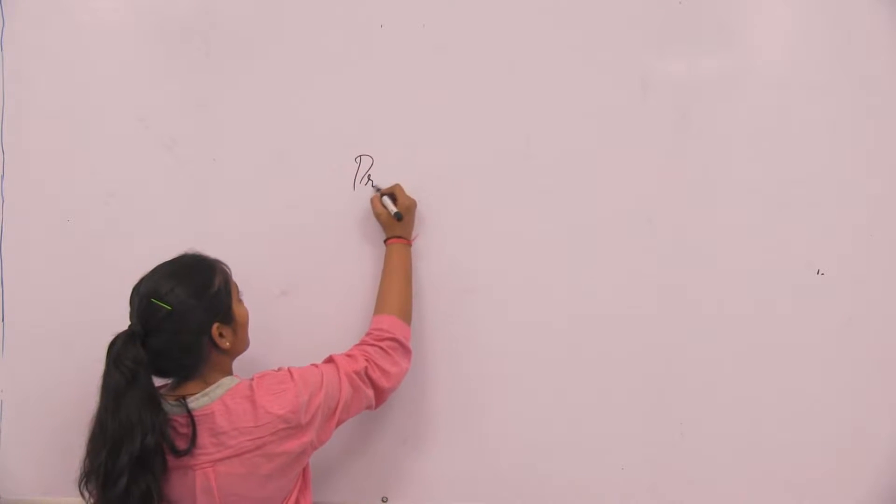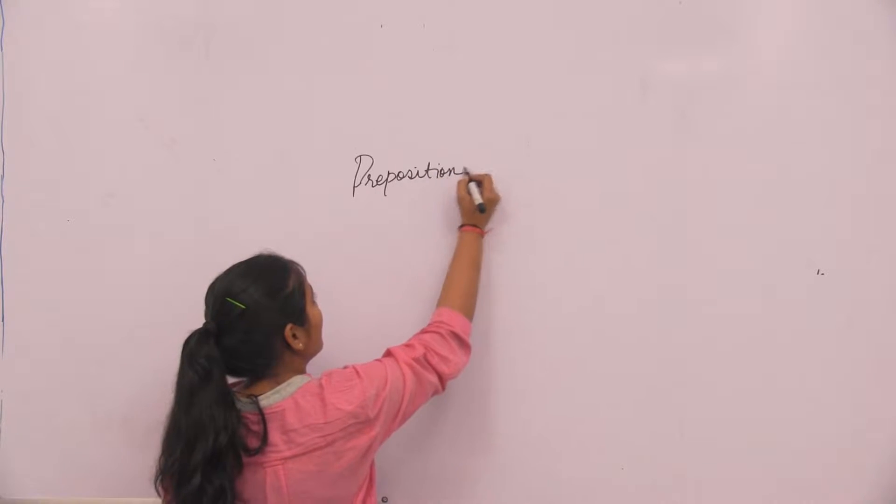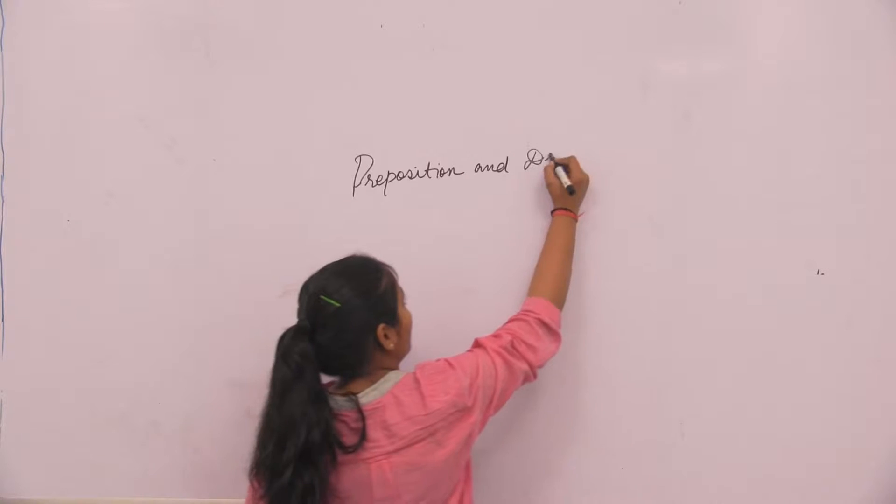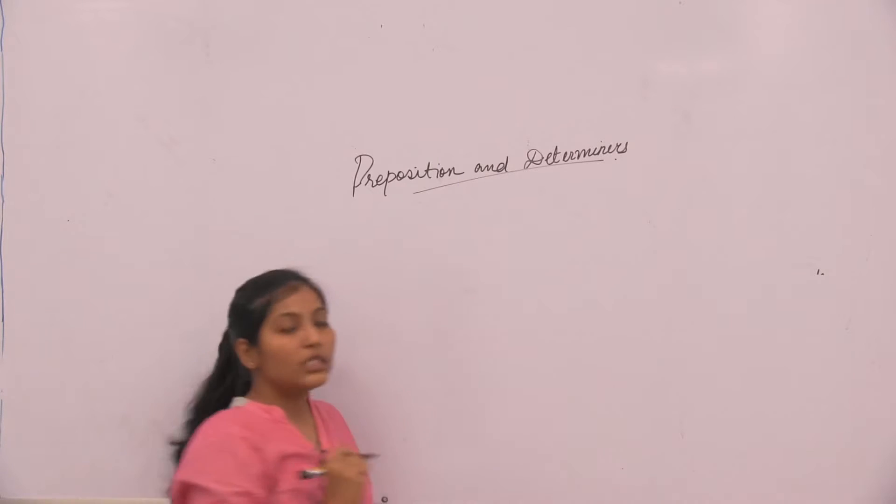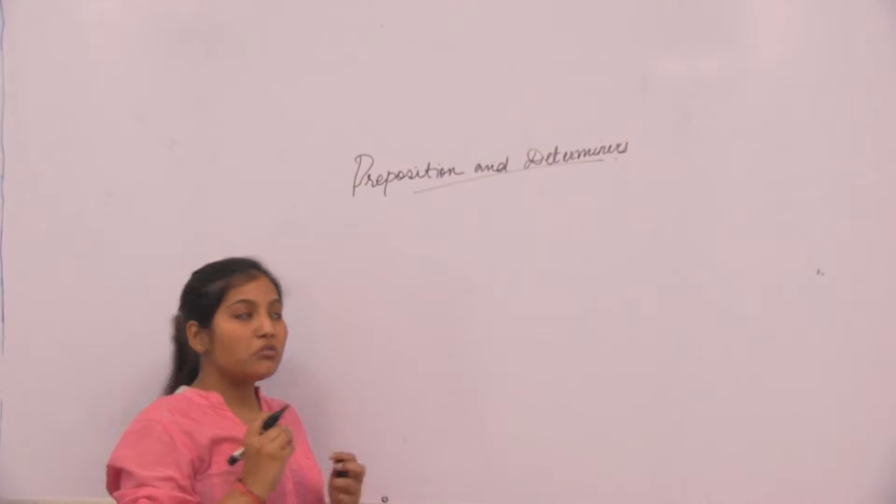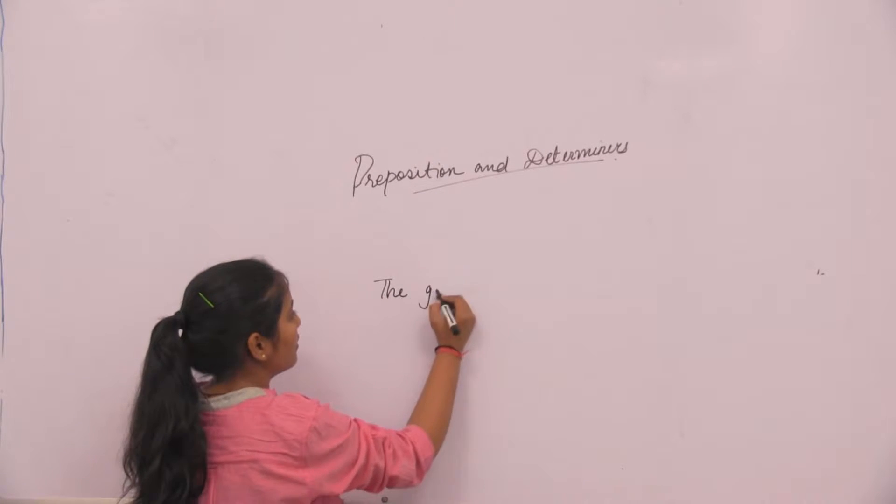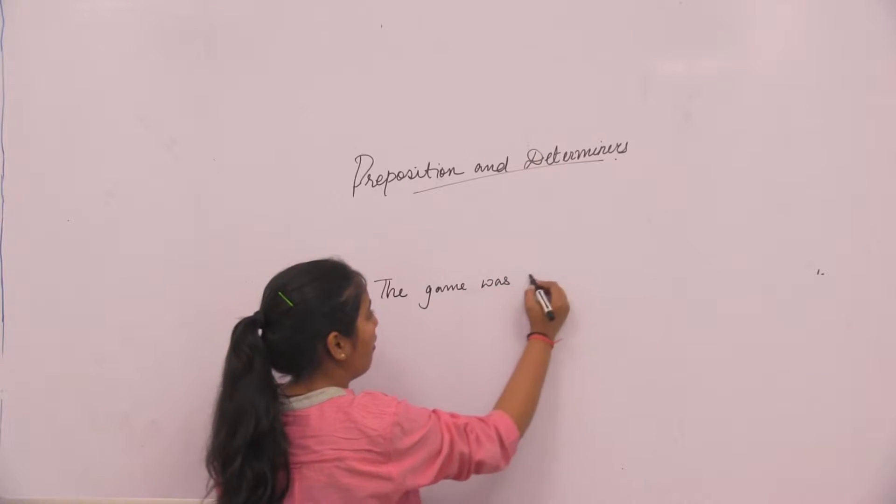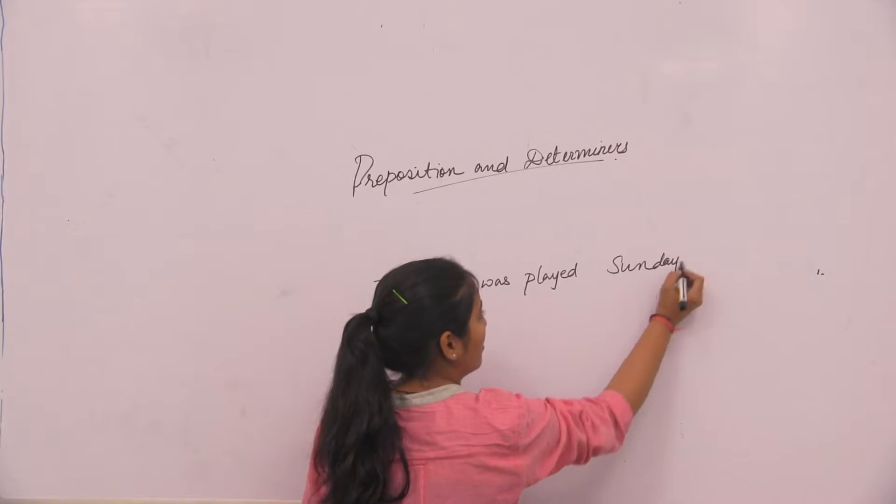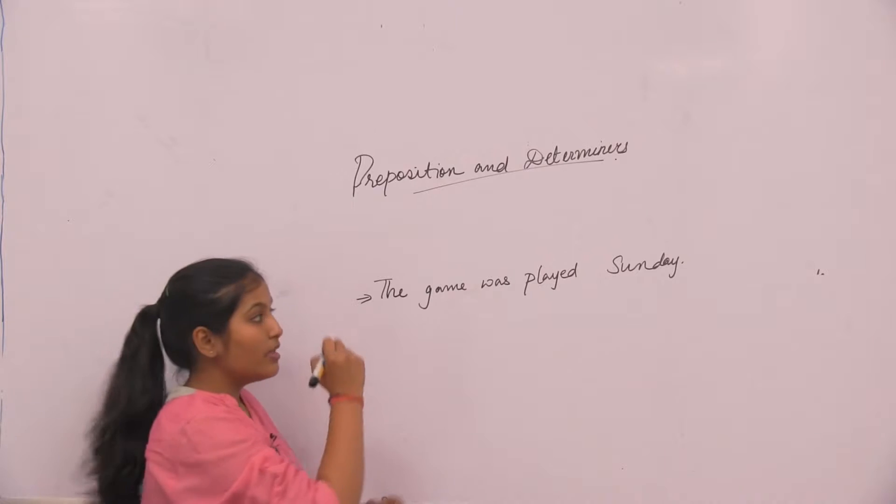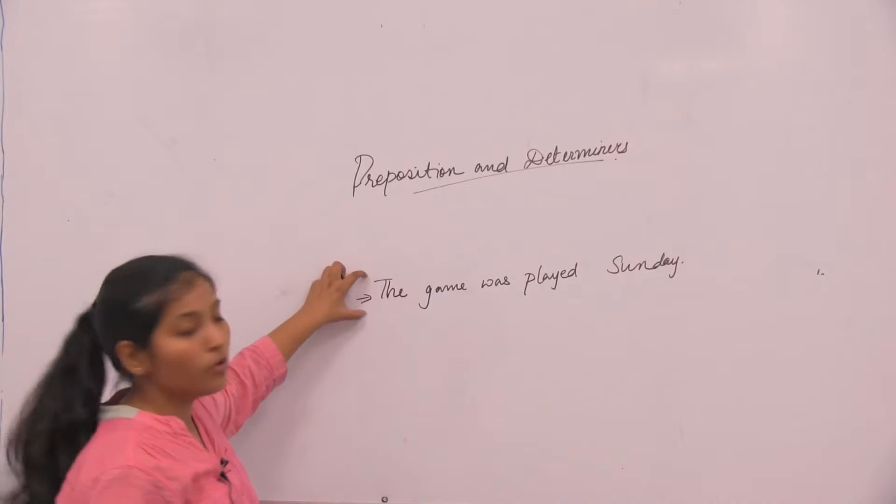That is prepositions and determiners. First of all, what are prepositions? Look at a sentence: the game was played Sunday. Isn't this sentence incomplete? Yeah, this sentence is incomplete because there is no preposition.